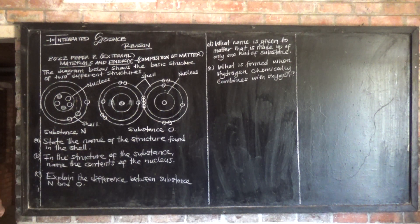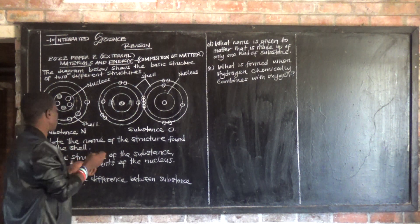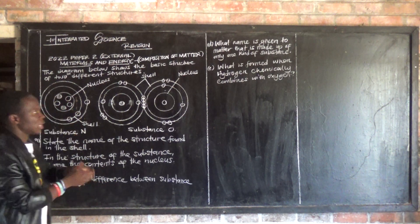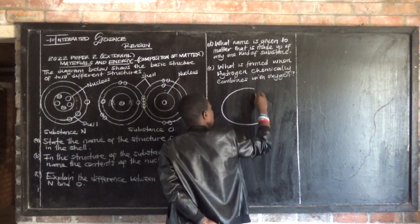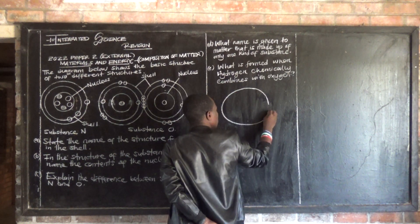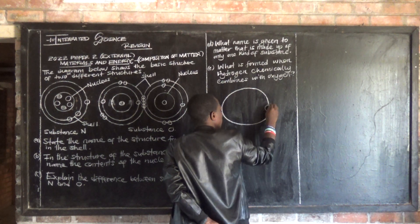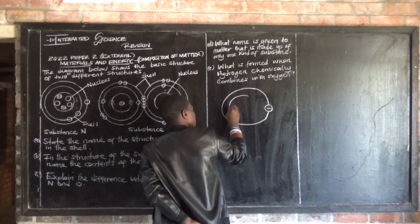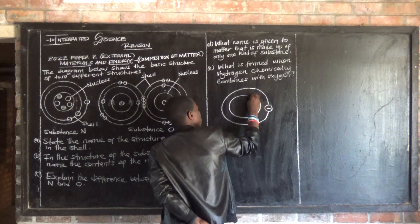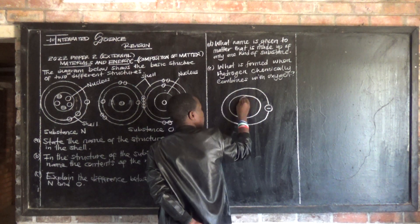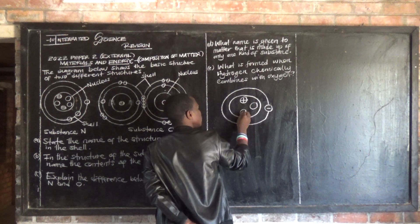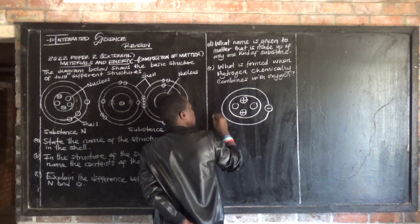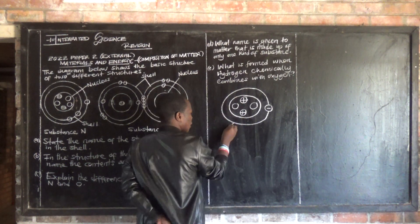N is an atom. We know how an atom looks — let me come up with a sketch. So an atom looks something like this. It's a simple atom. We have an electron, then we have the nucleus — this is the central part of an atom. Then we have a proton, a neutron, and we have a shell.